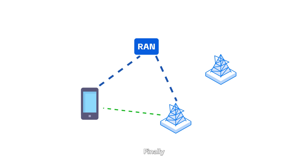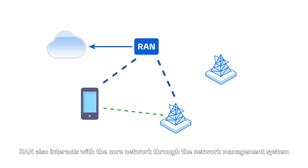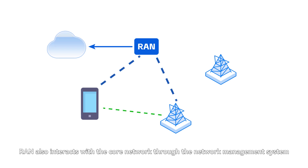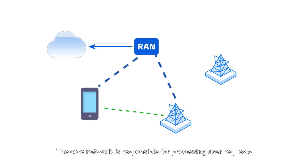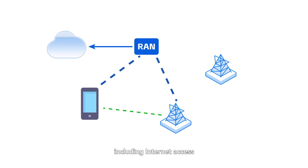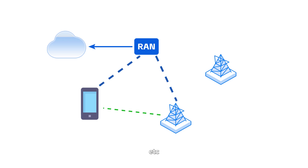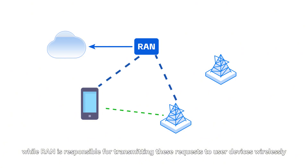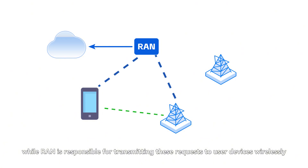Finally, RAN also interacts with the core network through the network management system. The core network is responsible for processing user requests, including internet access, voice services, etc., while RAN is responsible for transmitting these requests to user devices wirelessly.